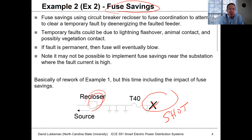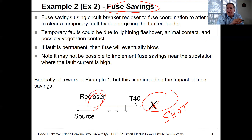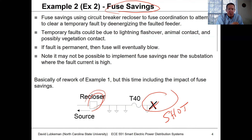It's not always possible to do fuse savings. If we're at the top of the feeder, sometimes the fault current is so high that we can't get the right coordination — the fuse will blow right away anyway. So we don't always have fuse savings done uniformly on a whole distribution feeder; we might pick our spots where we want fuse savings and other spots we may not.